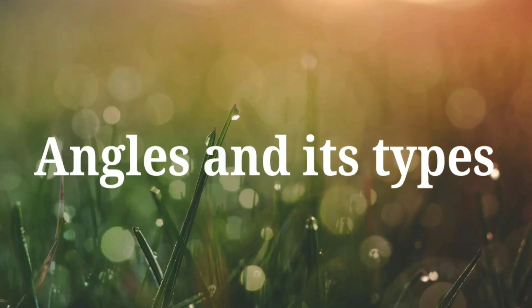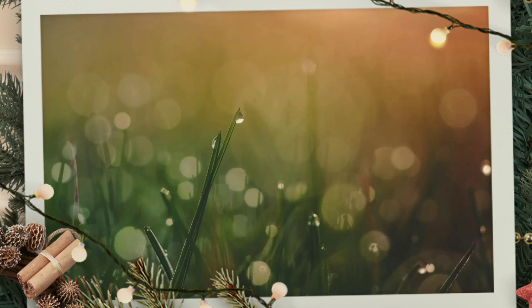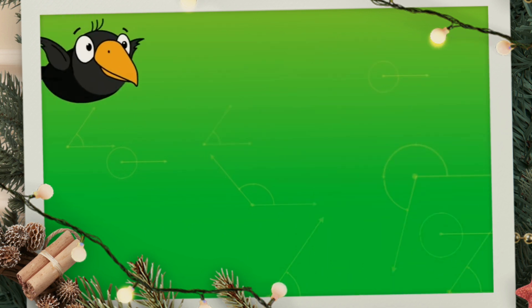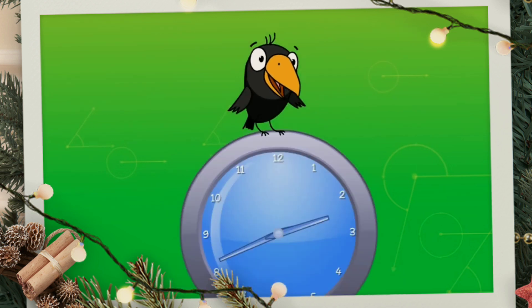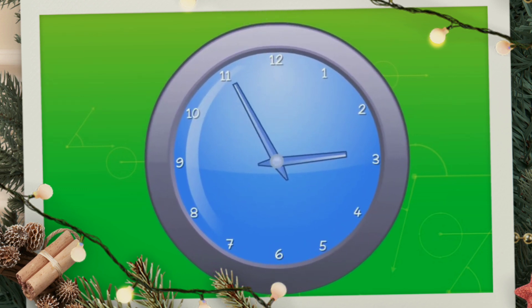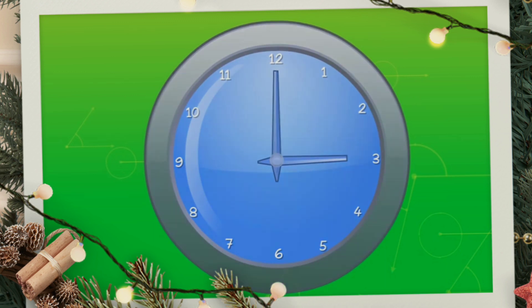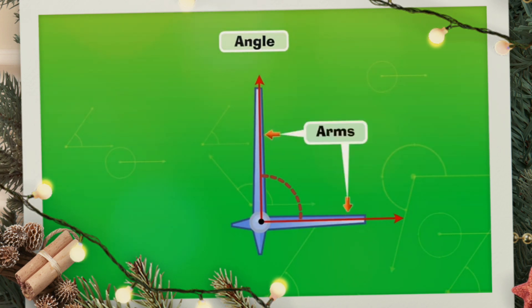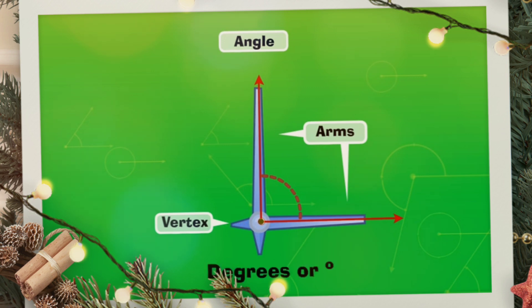Hi students, today we are going to learn about angles and their types. In your home you can see a clock — the clock has two hands, and the movement of those hands makes different kinds of angles. We take the two hands and consider them as two rays. The distance between the two rays is called an angle. The rays are called arms, and the two arms intersect at a point — that point is called the vertex.